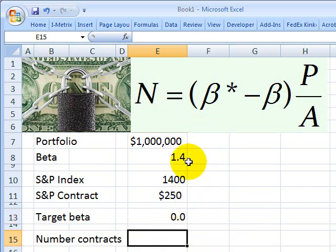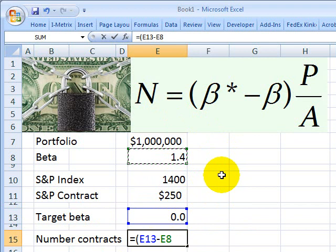I can use this formula and say the number of contracts equals, open parens, the target beta of zero minus the current portfolio beta of 1.4, close parens, multiplied by the portfolio value of a million divided by—now I just need A.